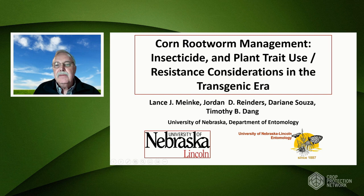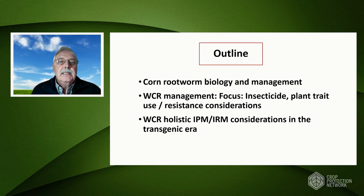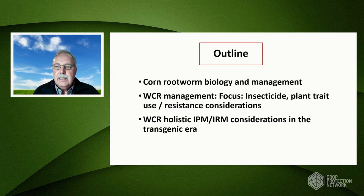The general outline I'm going to follow is on the slide. I'm going to give you a brief overview of corn rootworm biology and management, then focus on insecticide use, a little bit about plant trait use, and resistance considerations when using both. At the end I want to talk about the need to develop holistic integrated pest management and resistance management programs in the transgenic era we're in right now.